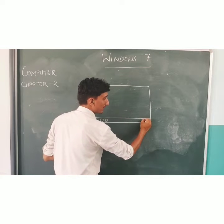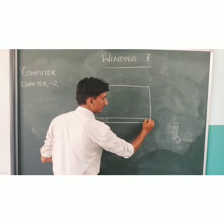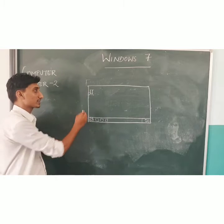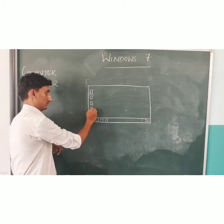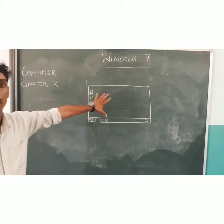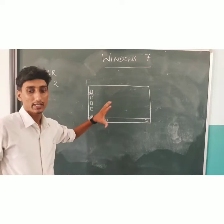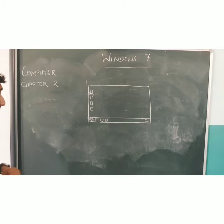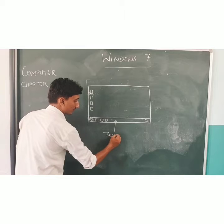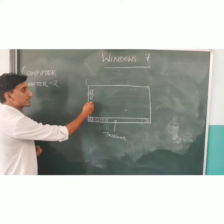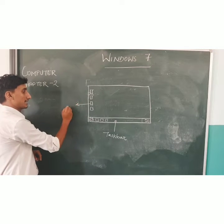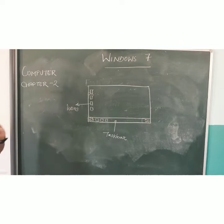On the screen or monitor, there is an area where you can see the date and time. This is a complete setup with different parts. There are dot-like or picture-like structures called icons. These picture-like structures are known as icons.